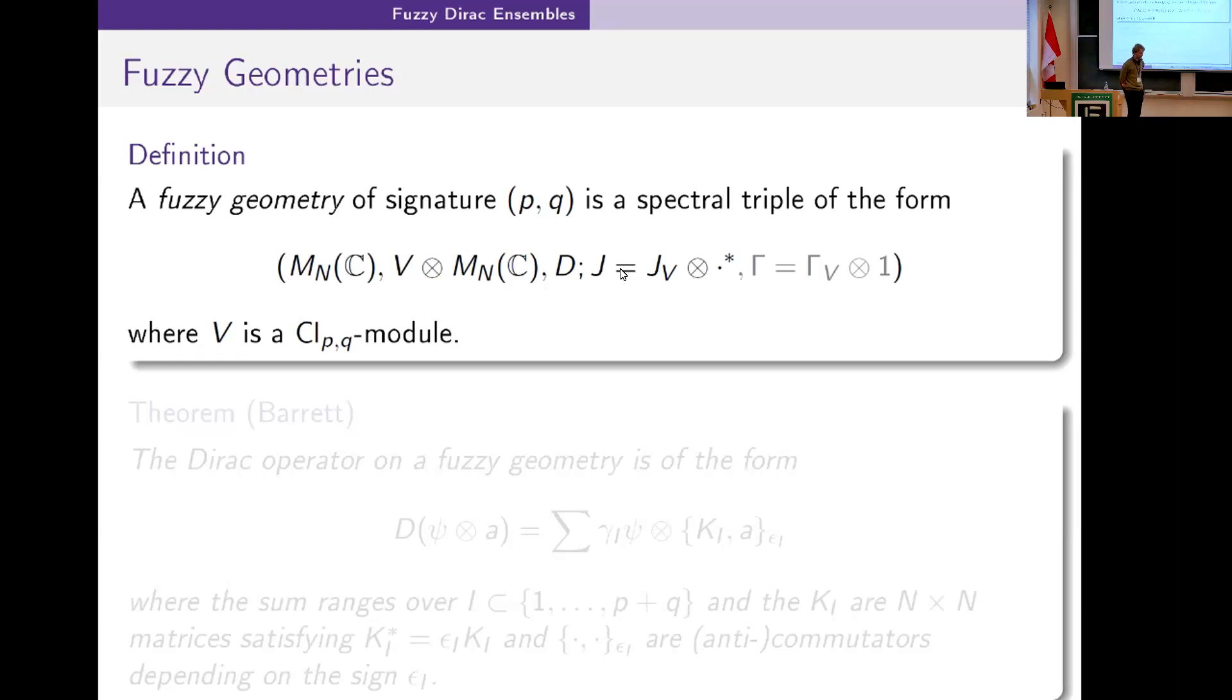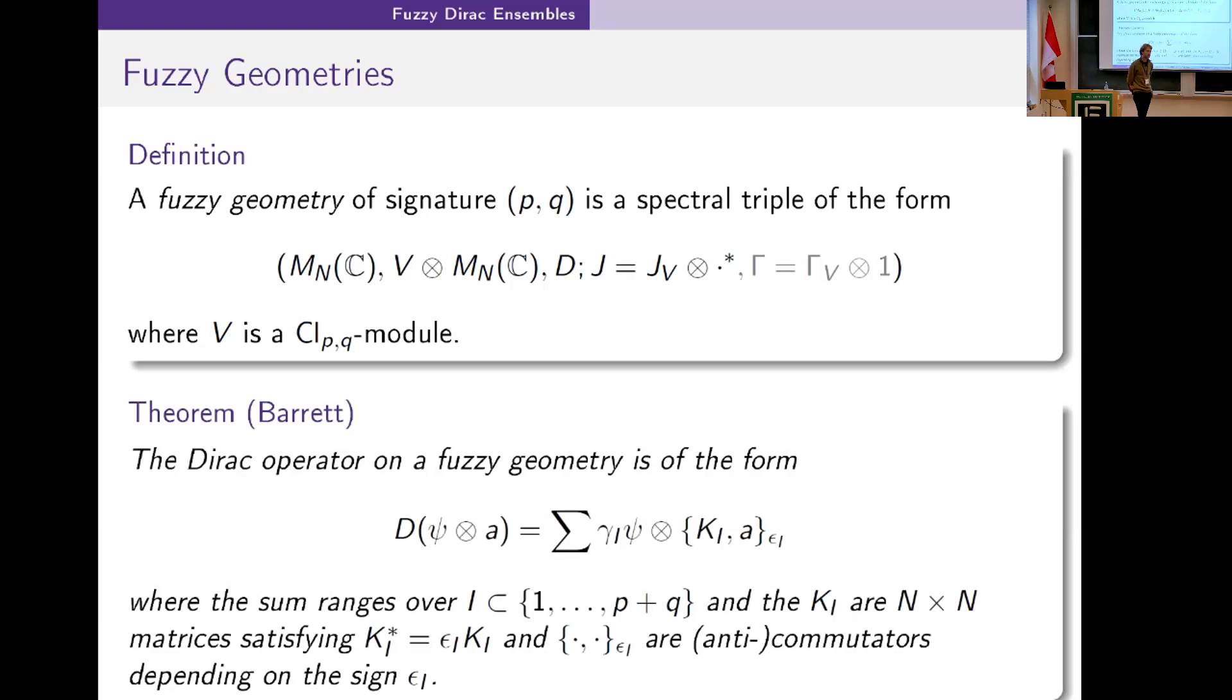It all starts from fuzzy geometries. The terminology is introduced by John Barrett as far as I know, which are spectral triples of this particular form. The reason we want to work with these fuzzy geometries is because the space of allowable Dirac operators takes a very nice simple form.